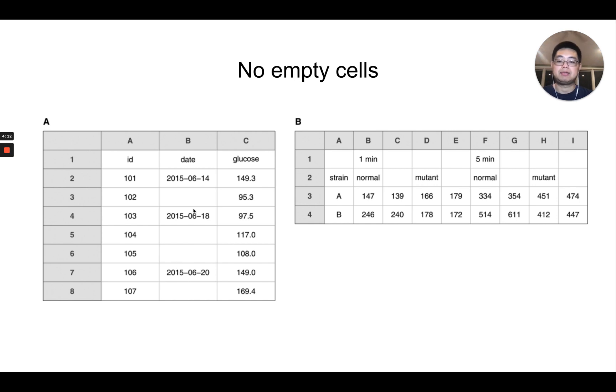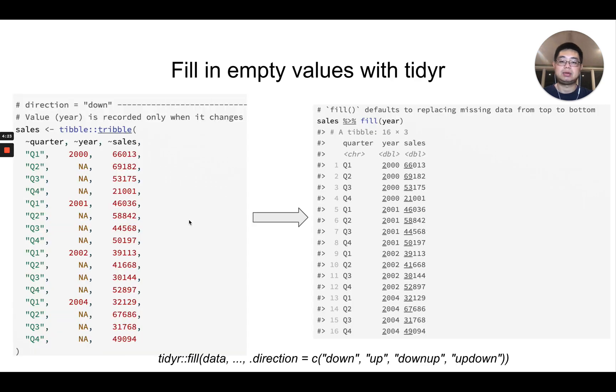Actually, in R, we can actually fill in those values after we confirm with the biologist. So we know, okay, this should be the same as here, right? Those two should be the same as here. So in R, you can use this package tidyr and use the fill function. So this is raw data and you have some NAs here and you can use the fill function and this column name year here and you'll fill by default from top to bottom. So those will be filled in as 2000 and those will be 2001, 2002, and 2004 here.